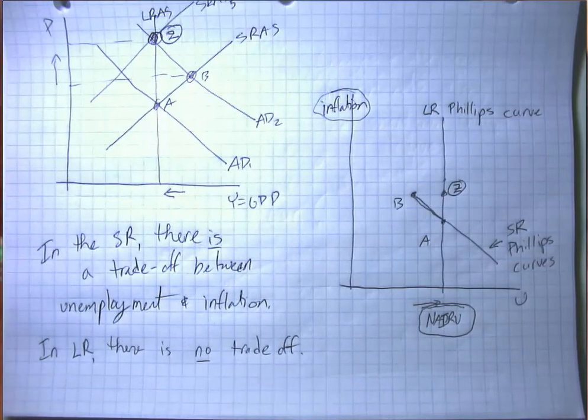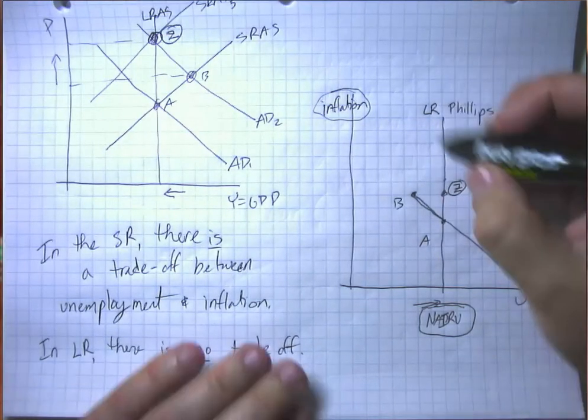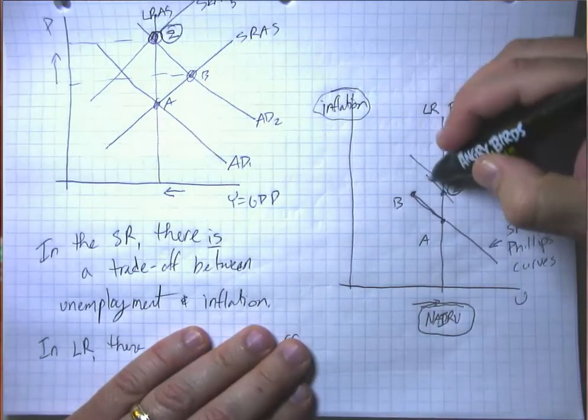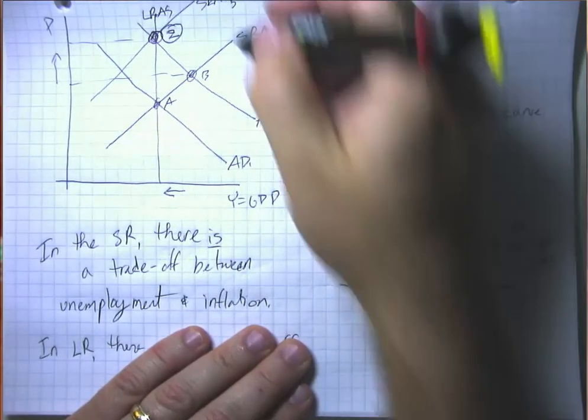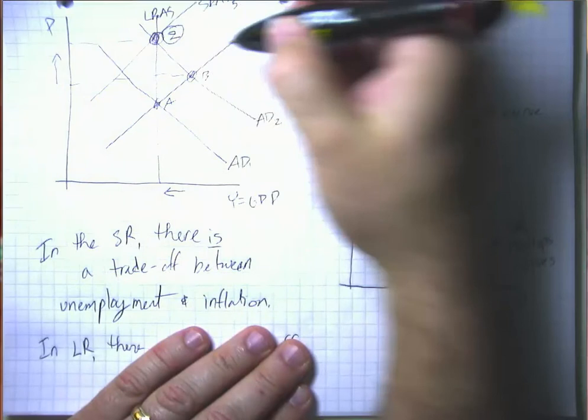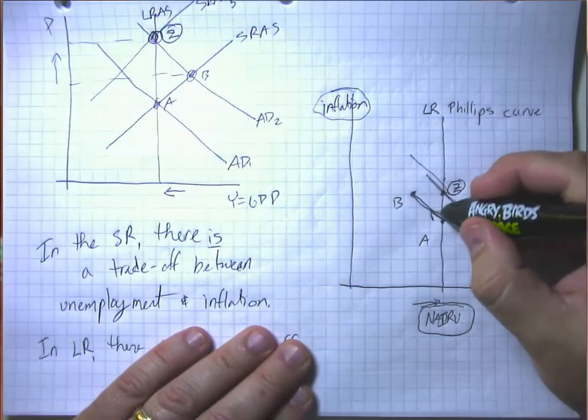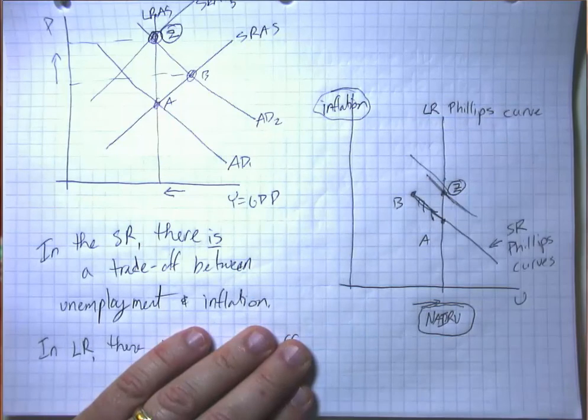So one way of thinking about this is in the long run the short run Phillips curve shifts, and in particular while a movement in aggregate demand caused a movement along a fixed short run Phillips curve, a movement in short run aggregate supply causes a shift of the whole Phillips curve.